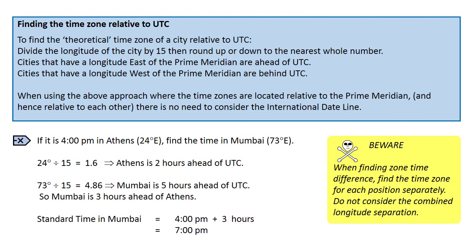To find the theoretical time zone of a city relative to UTC, divide the longitude of the city by 15, then round up or down to the nearest whole number. Cities with a longitude east of the prime meridian are ahead of UTC, and cities with a longitude west of the prime meridian are behind UTC. When using this approach, there is no need to consider the international dateline. Pause the video now and take a look at the worked example before we try a couple of problems together.